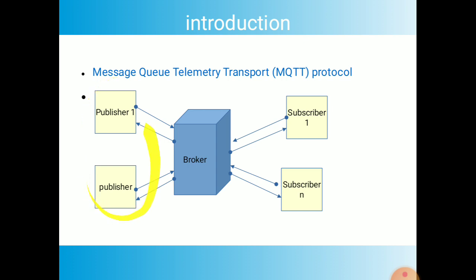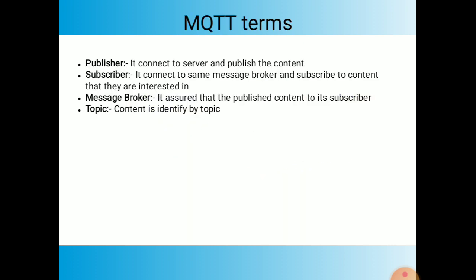Assume there are temperature sensors, body sensors, humidity sensors, and other types of sensors connected to the message broker. They generate messages to the broker. Then the subscriber is used to subscribe to this type of data from the message broker. The message broker sends all the gathered published data to the subscriber.